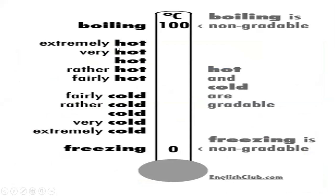We can also grade adjectives with adverbs on a scale. For example: extremely hot, very hot, rather hot, fairly hot — and on the cold side: fairly cold, rather cold, very cold, extremely cold, freezing. Note that 'boiling' and 'freezing' are extreme adjectives and are not gradable — you don't say 'very freezing.' Hot and cold are gradable adjectives.